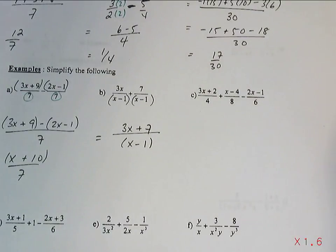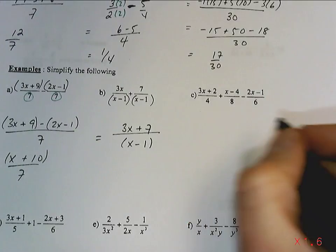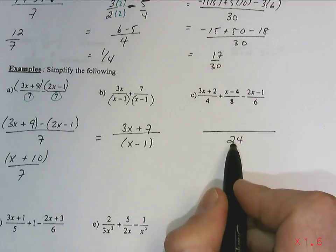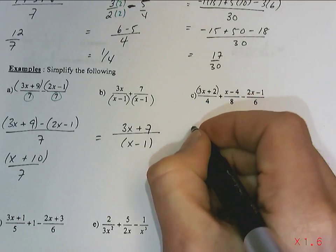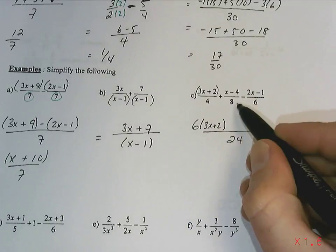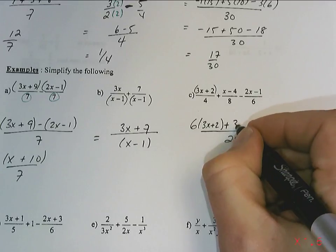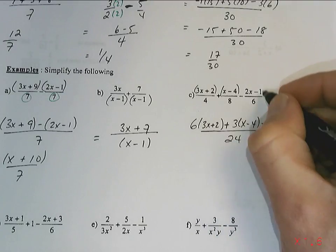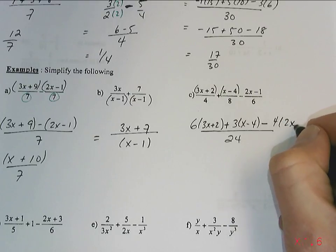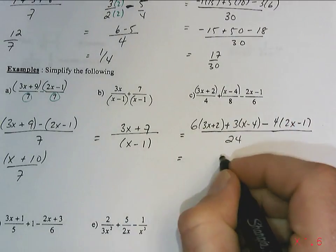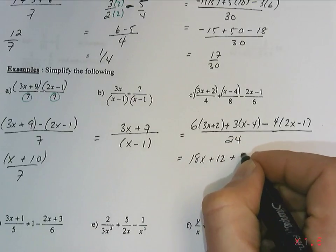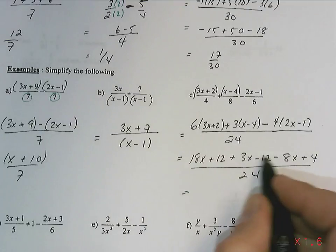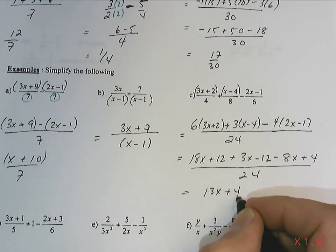Over here we have to find a common denominator — I think it's going to be 24. I multiply 4 by 6 to get 24, so I multiply the top by 6: 6 times (3x plus 2). I multiply 8 by 3 to get 24, so I multiply (x minus 4) by 3. And I multiply 6 by 4 to get 24, so I multiply (2x minus 1) by 4. Then we expand and collect like terms: 18x plus 12 plus 3x minus 12 minus 8x plus 4 over 24, which gives us 13x plus 4 over 24.